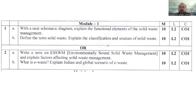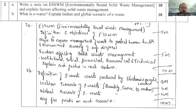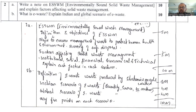Question 2a asks you to write a note on Environmentally Sound Solid Waste Management (ESSWM) and explain the factors affecting solid waste management. Write the meaning and objectives of ESSWM. There are two types of technology: hard ESSWM and soft ESSWM. Then list the factors affecting ESSWM — institutional, social, financial, environmental, and technical — and explain each factor individually. This is a 5+5 = 10 marks question.